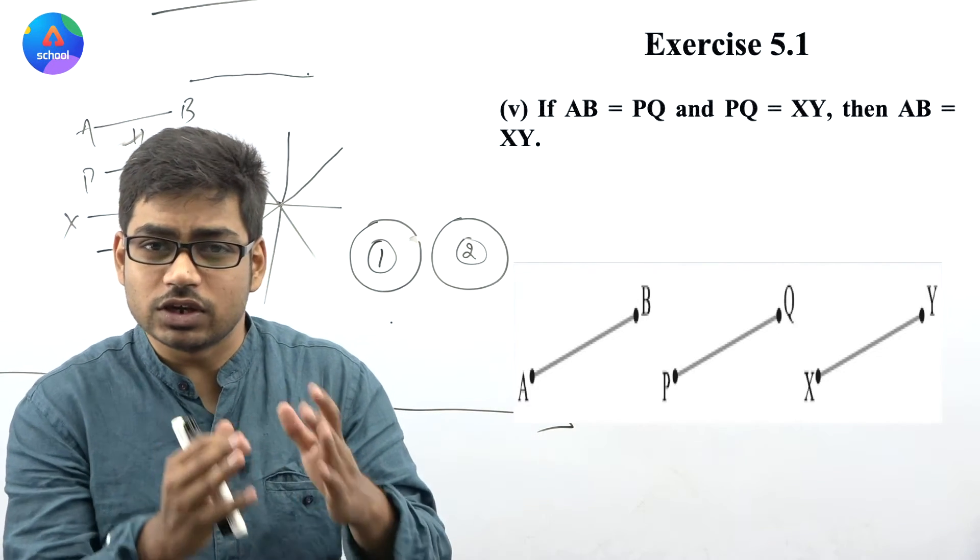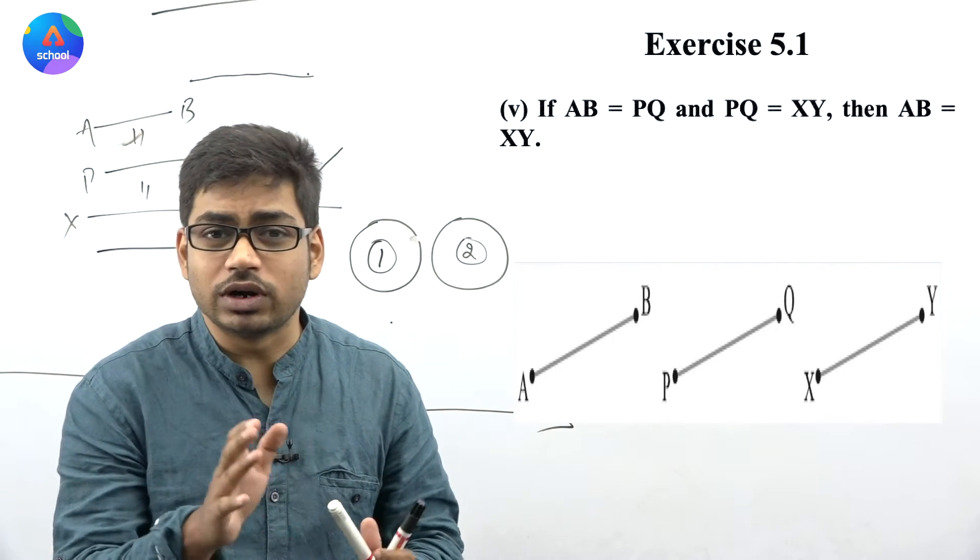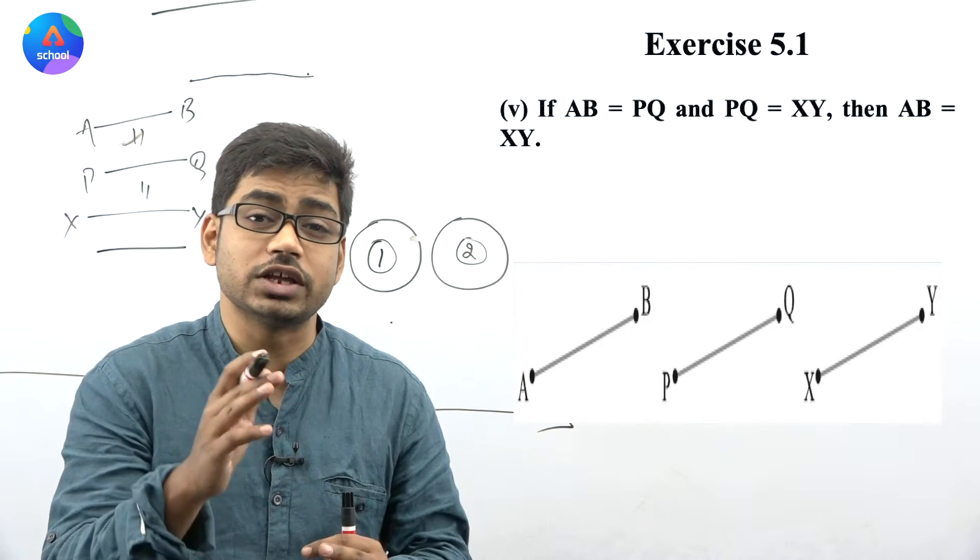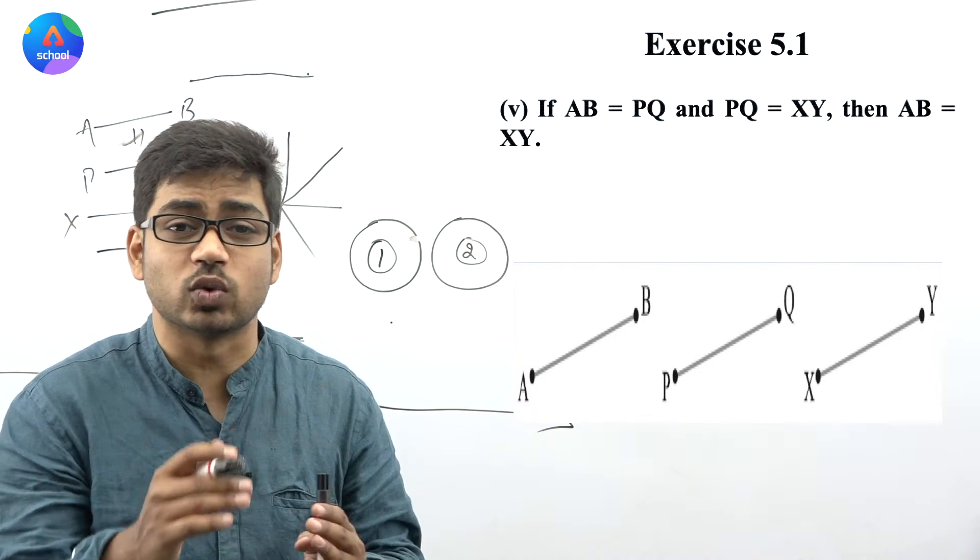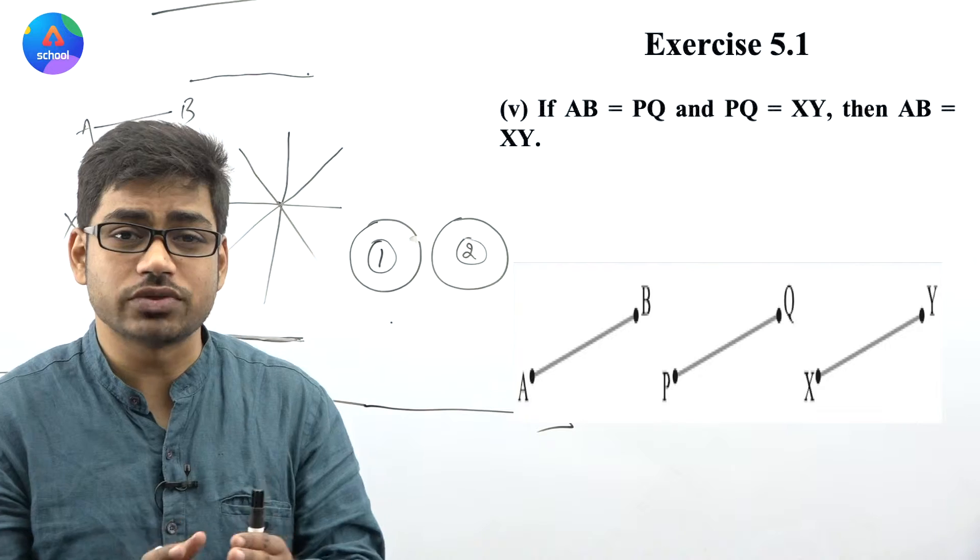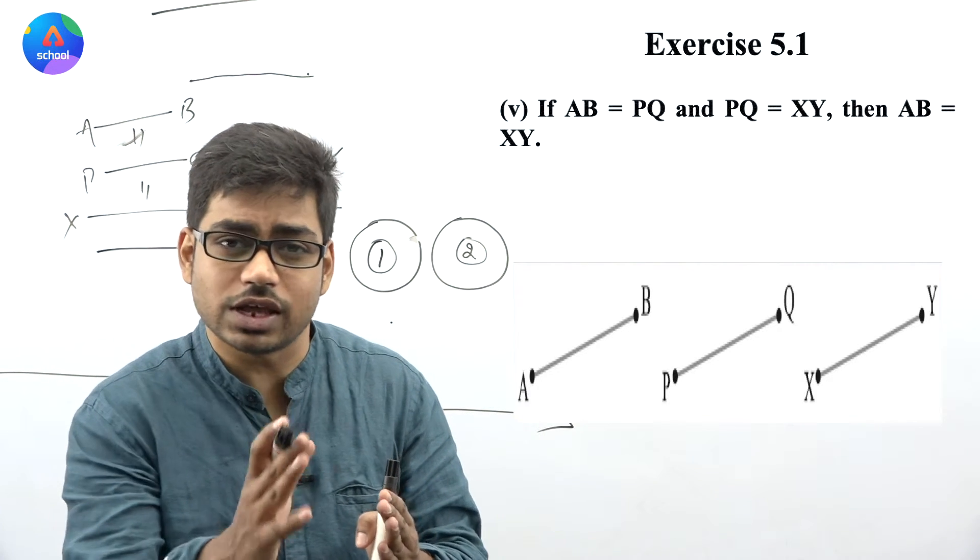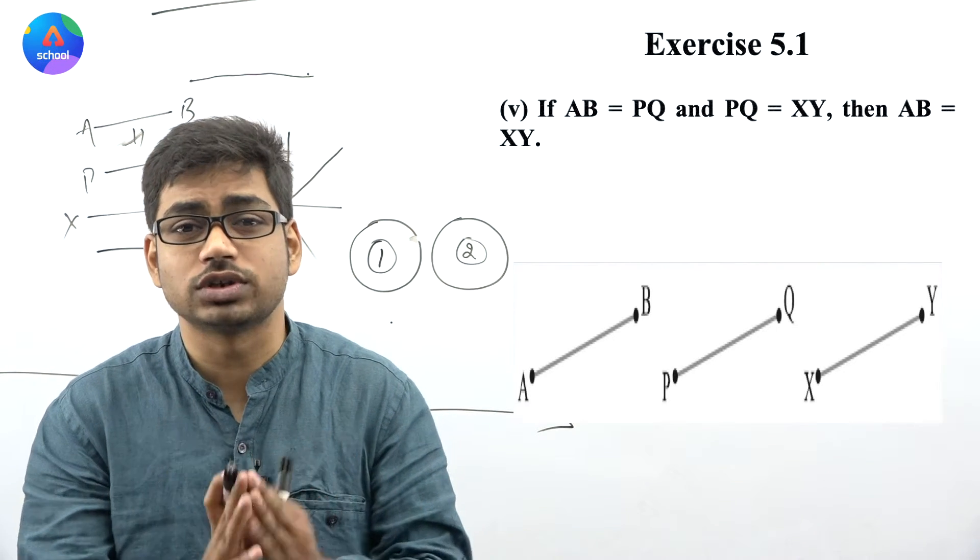AB will be equal to XY. Things which are equal to the same thing are equal to one another. If one thing is equal to two things, then they are equal to each other.